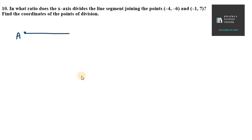So we have corner points A and B. I will take A as minus 4, minus 6, B as minus 1, comma 7. Now in this case it says x-axis divides. This means the coordinate here should be x, 0. Because they said x-axis intersects.